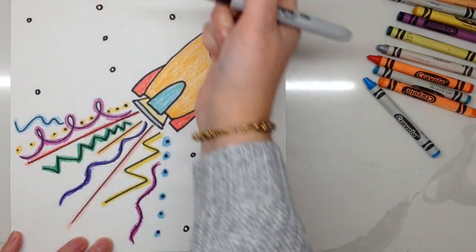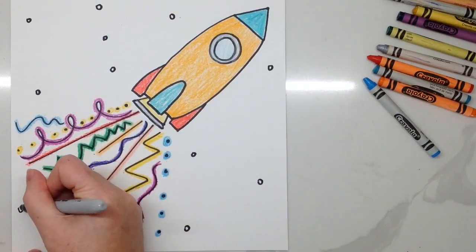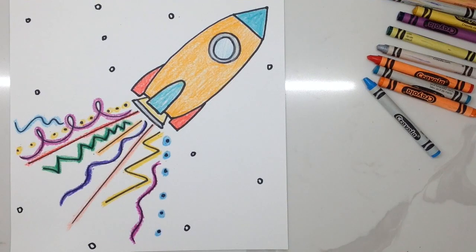The first step in that would be creating some stars. You can use small circles to create your stars or we could create a five-point star.